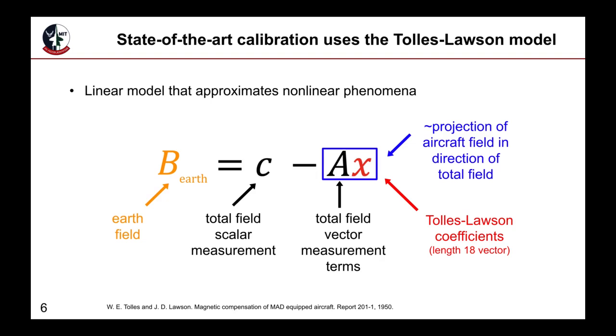The state-of-the-art calibration model used to obtain the tens of meters of accuracy is the Tolles-Lawson model. This model works well for the observable effects with the tail stinger measurements that were discussed earlier. The goal of the Tolles-Lawson model is to obtain clean earth field measurements. This is done by using scalar total field measurements, which contain corruption and are shown by the letter C in this equation, as well as vector total field measurements, which are represented by the A matrix in this equation.